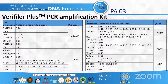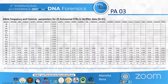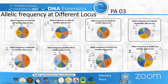The slide shown here describes a table that includes loci included in the Verifiler Plus multiplex kit, details about the alleles present in the allelic ladder, and the dye labels. The next table demonstrates the statistical report of the results generated in terms of allelic frequency for 23 autosomal STRs included in Verifiler Plus for the Mahar population, along with other forensically important parameters. A graph describes the allelic frequency at different loci present within the Verifiler Plus kit.